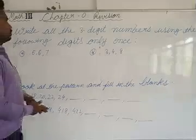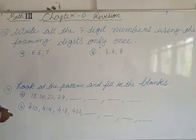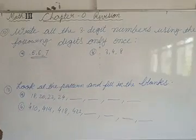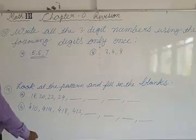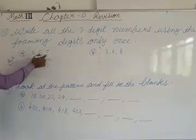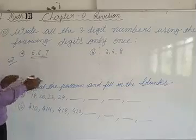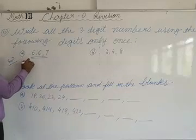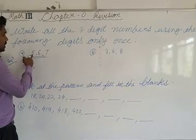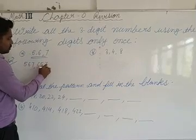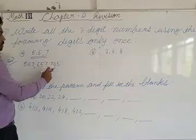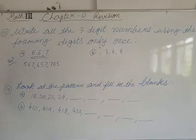The next type of problem is: write all the 3-digit numbers using the following digits. Using digits 5, 6, and 7, you have to form as many numbers as possible, each digit used only once. Starting from the smallest: 567, then 657, then 765. Let's also form 576, 675, and 756 — these are all six 3-digit numbers you can form.